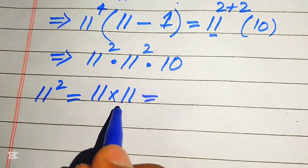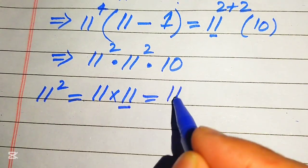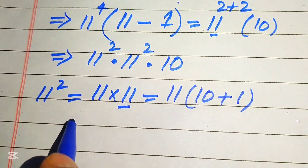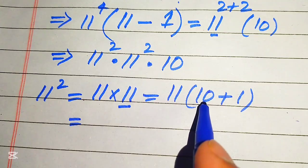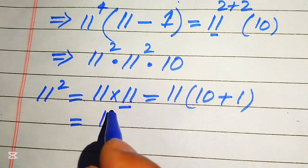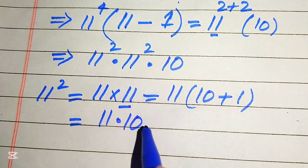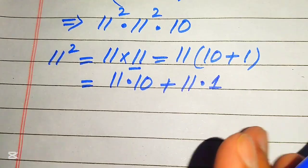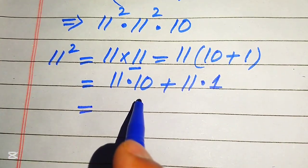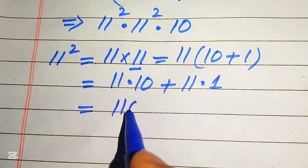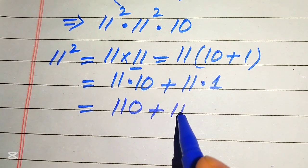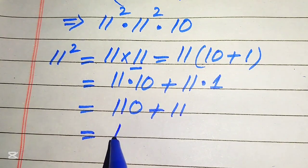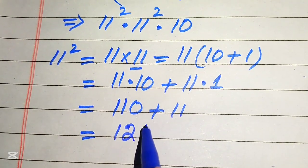We write 11 as 10 plus 1. In the next step we multiply 11 on both of these values: 11 multiplied by 10 plus 11 multiplied by 1, which gives 110 plus 11, and 110 plus 11 equals 121. So the square of 11 is 121.